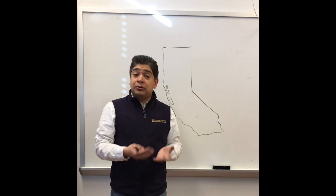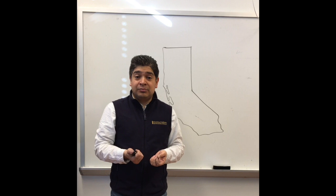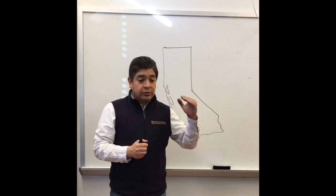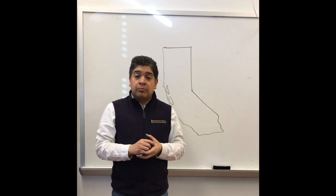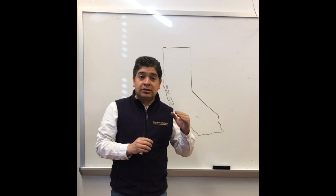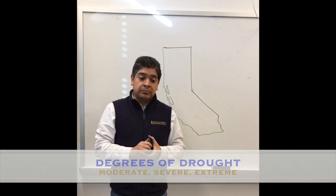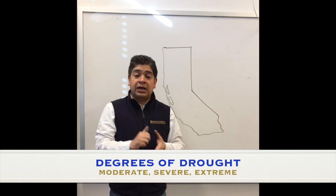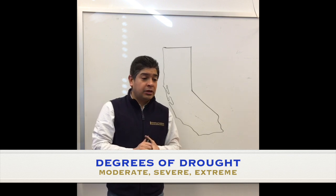It doesn't matter — it might be raining, but we might still be in a drought. There are droughts that are moderate, severe, or extreme, like the one we had the last five years in California.